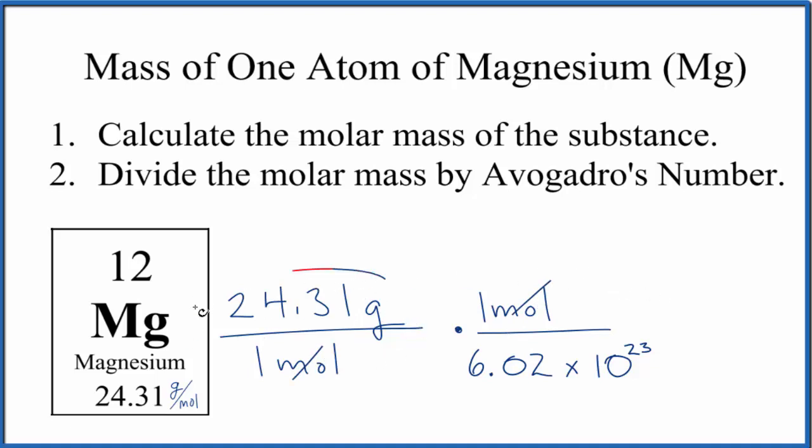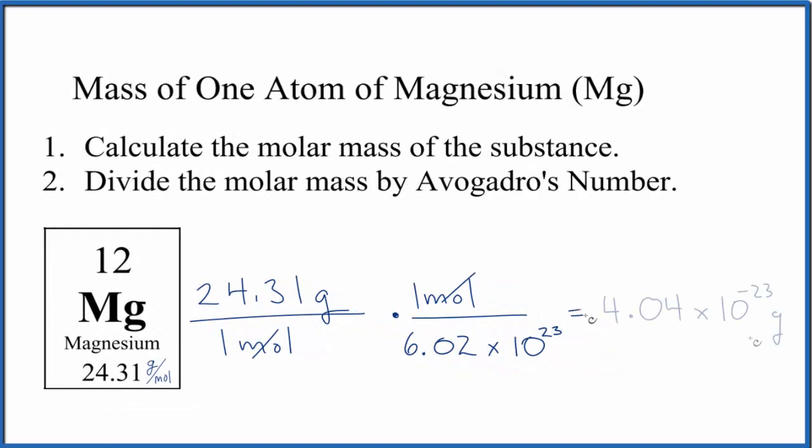But really, we're just dividing the atomic mass by Avogadro's number. When we do that, we get 4.04 times 10 to the negative 23rd grams. And that makes sense. An atom should be a really small number. This is a small number.